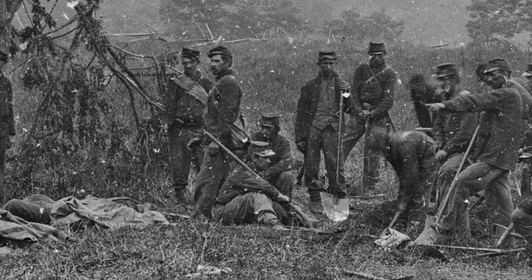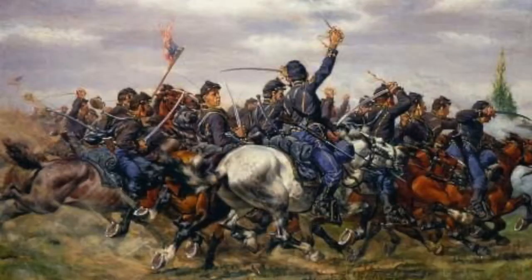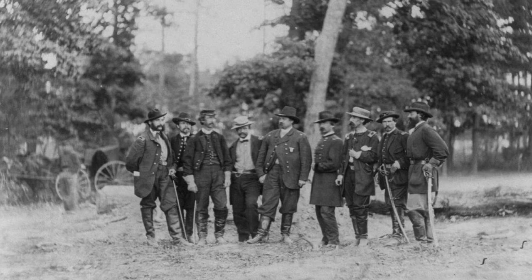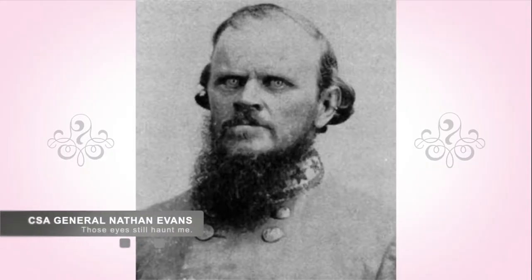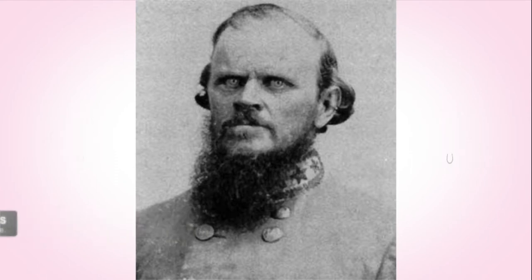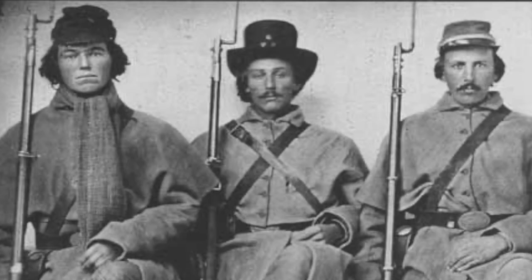On December 11th, General Foster and his 10,000 infantry and 640 cavalry soldiers approached from New Bern, near the intersection of the Atlantic and North Carolina Railroad and the Wilmington and Weldon Railroad. This was located on the path to Goldsboro. Waiting for him was Confederate Brigadier General Nathan G. Shanks Evans. His brigade consisted of 2,014 men whose job it was to stop the Union advance.